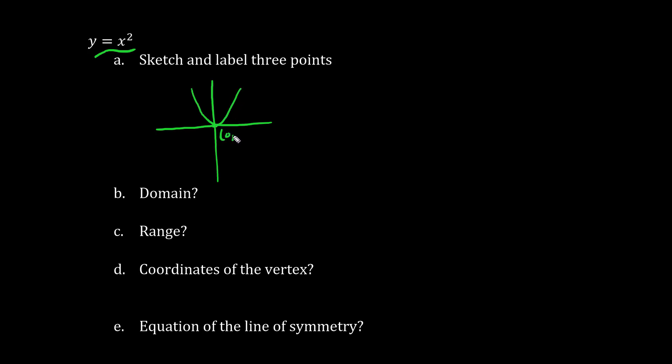So we have 0, 0, and we have 1, 1, and we have 2, 4, and we can even do more than three points. We can have 3, 9. Why? Because the x value is 3, and y equals x squared. When we square 3, we get 9, y equals the x value squared.